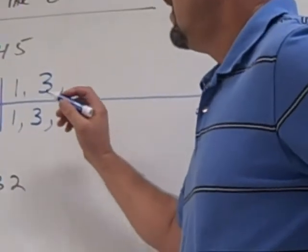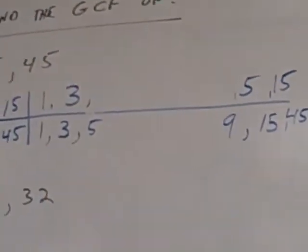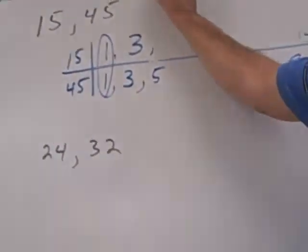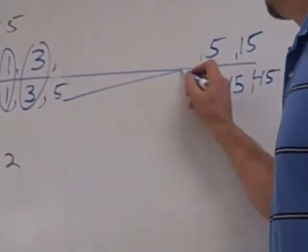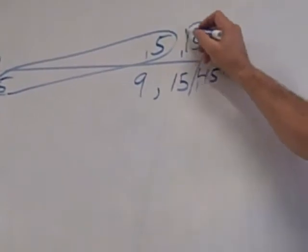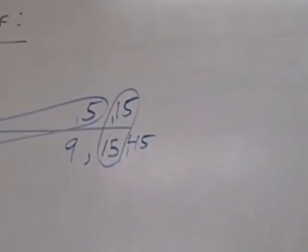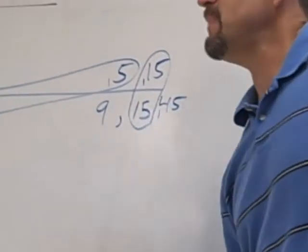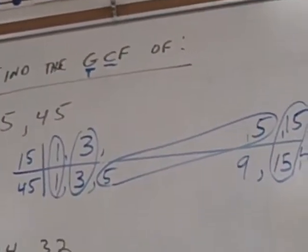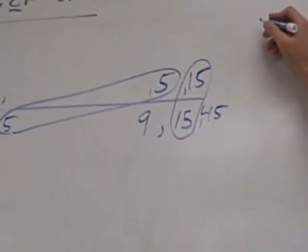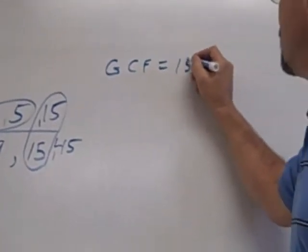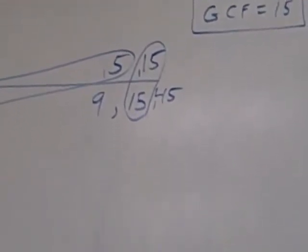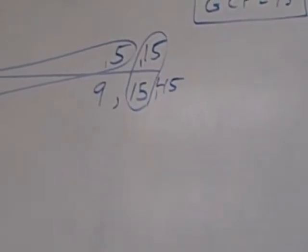Now let's circle what's common. Ones, threes, fives, and fifteens. Those are all the common ones. But we're looking for the greatest. Greatest means biggest in this list that is circled. What's the biggest one? Fifteen. So I'll put GCF equals fifteen. If it was confusing last year, is this a little better? Yes.